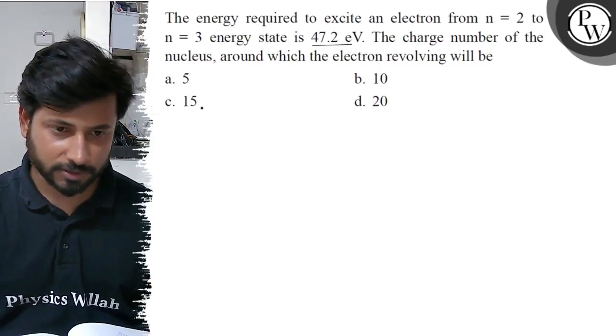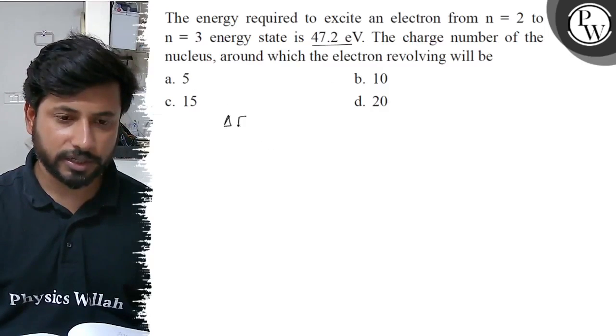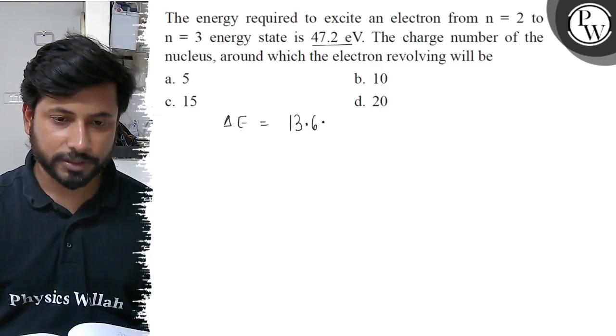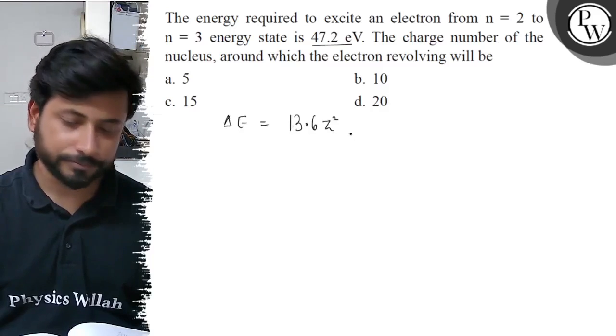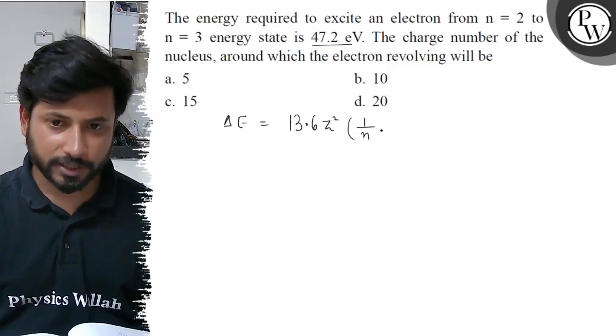Option A is 5, option B is 10, option C is 15, option D is 20. So this energy delta E equals 13.6 Z squared times 1 over n final squared minus 1 over n initial squared.